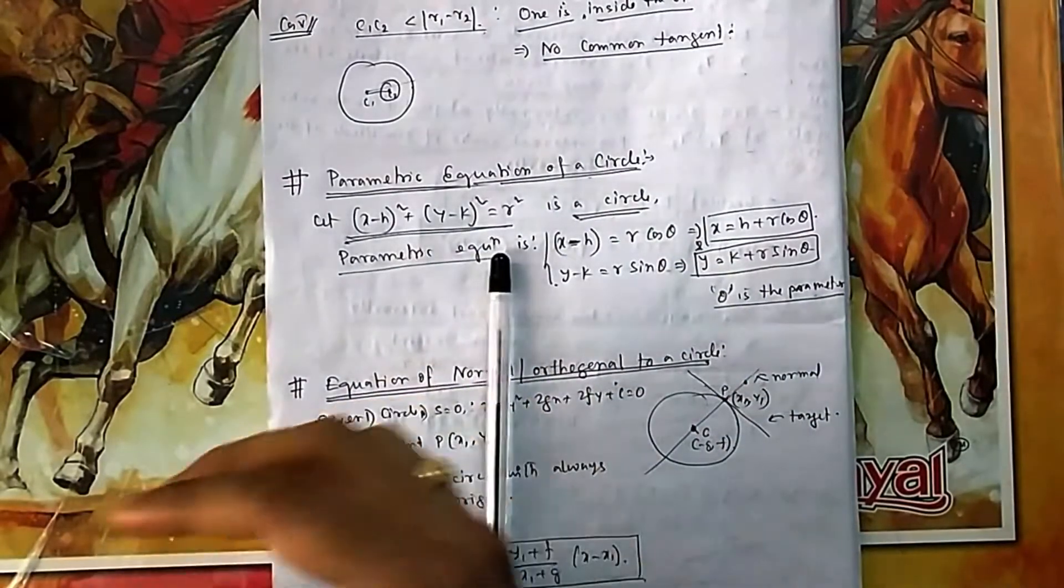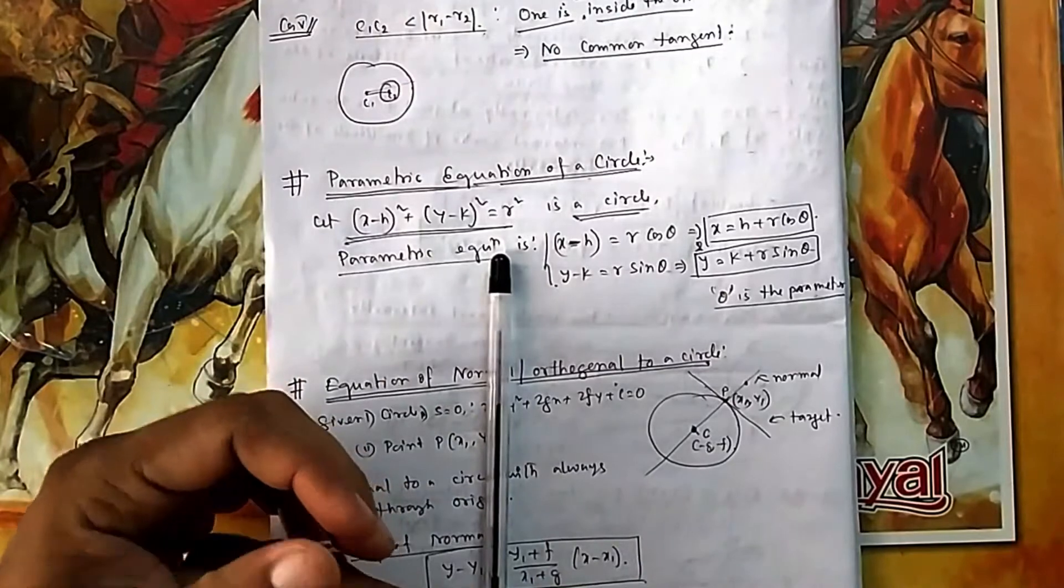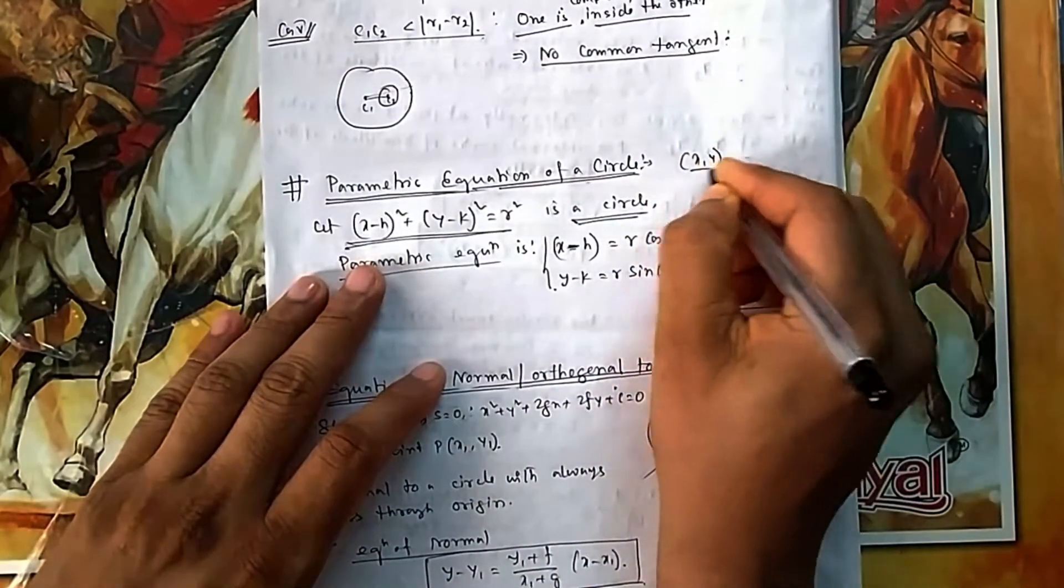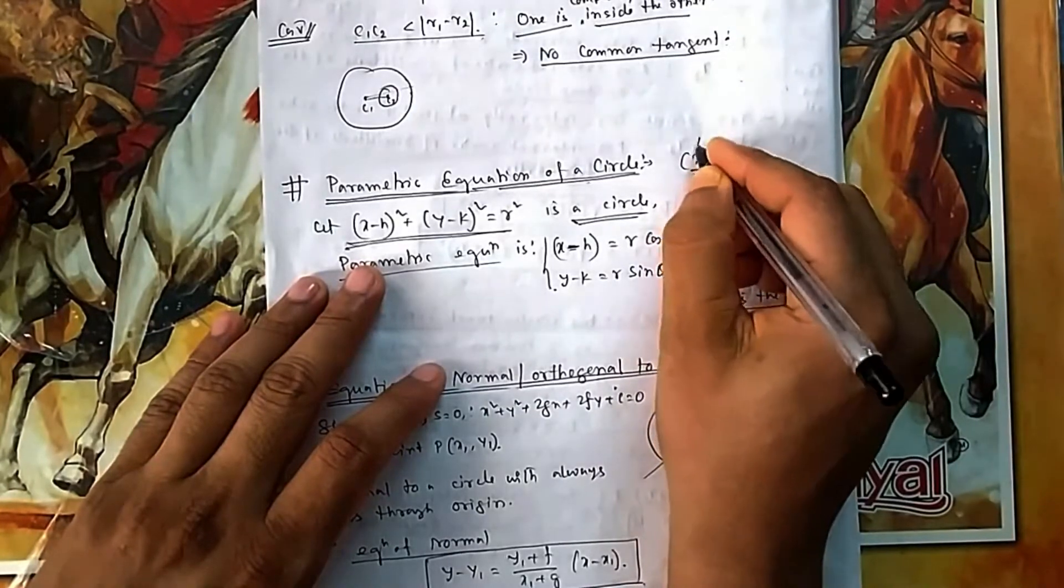In normal Cartesian format, if you take x and y as coordinates, you have two variables with you. That means you will need two equations. But if I can take a point which has one variable only, then it becomes helpful for me in some calculations.